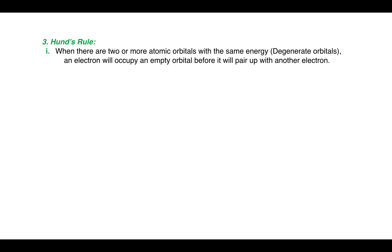The third rule that governs the filling of atomic orbitals is called Hund's rule. This rule can also be explained in two parts. In the first part: when there are two or more atomic orbitals with the same energy — that is, degenerate orbitals — an electron will occupy an empty orbital before it will pair up with another electron.